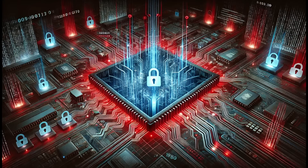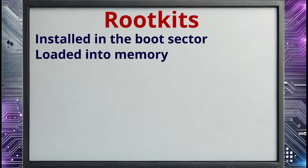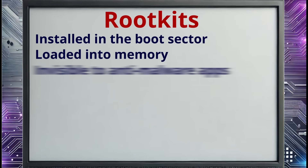Next, we need to look at rootkits. Rootkits are a particularly insidious type of malware. Rootkits are installed within the boot sector of the infected computer's hard drive. As such, the BIOS of that computer system actually boots from the rootkit, thinking that the rootkit is actually an operating system like Microsoft Windows. The rootkit code is then loaded into memory, and the rootkit itself loads the legitimate operating system. Because the rootkit was loaded before the operating system was booted, the rootkit is completely invisible to most anti-malware scanners — they are very, very difficult to detect.